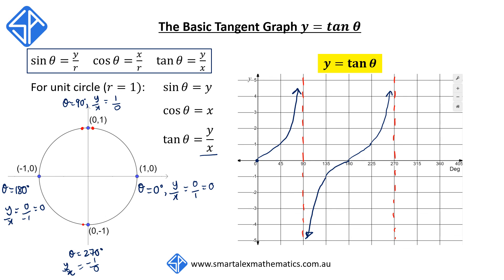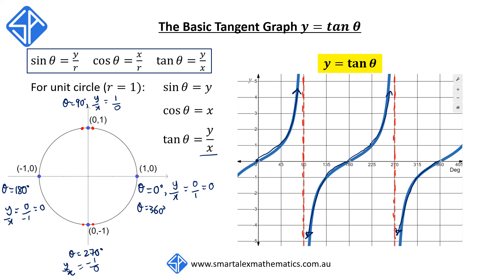Just above 270 degrees, our point is in quadrant 4 where x is positive but y is negative, so the ratio is negative and the function approaches negative infinity. As we get back to theta equal to 360 degrees, the whole pattern repeats itself. And this is the graph of y equals tan theta.